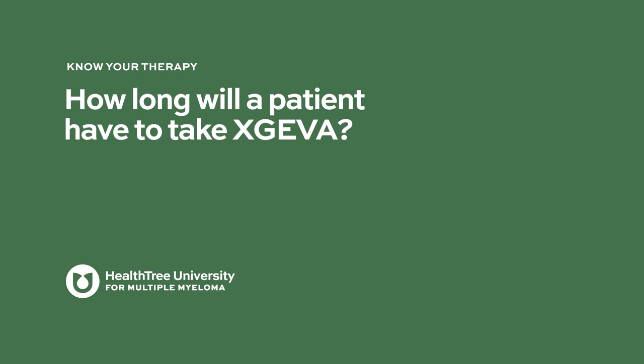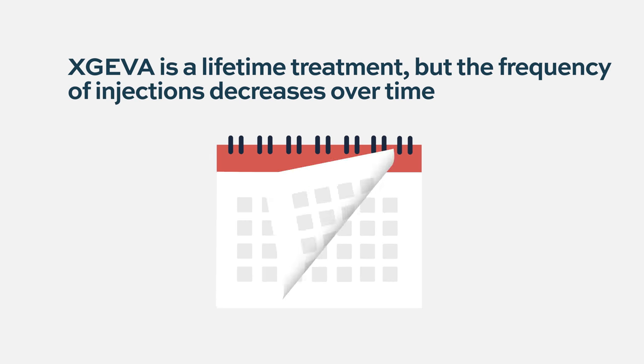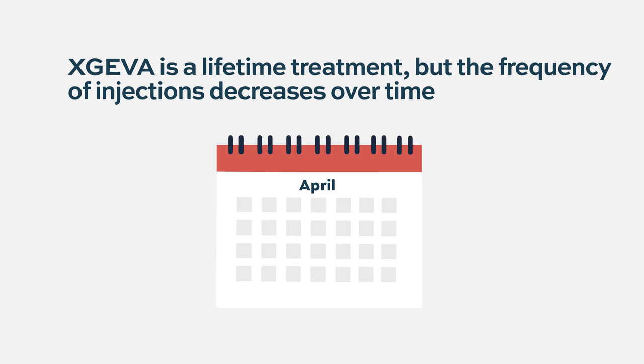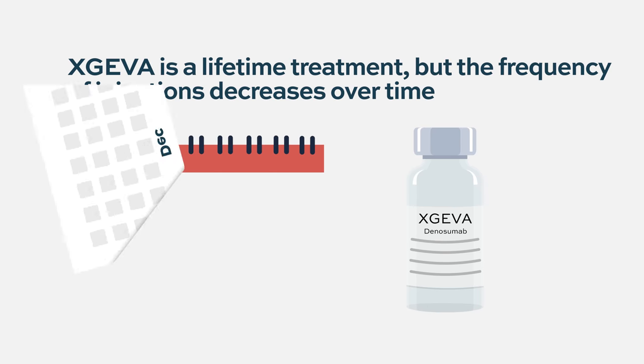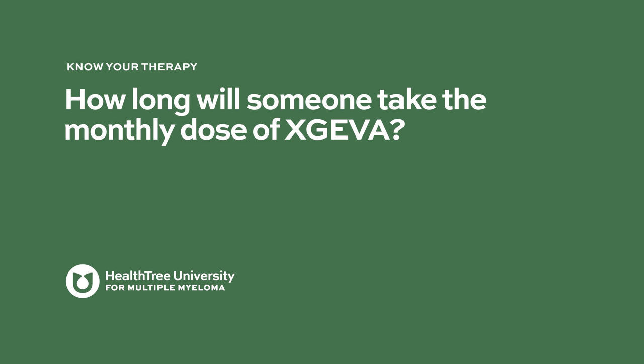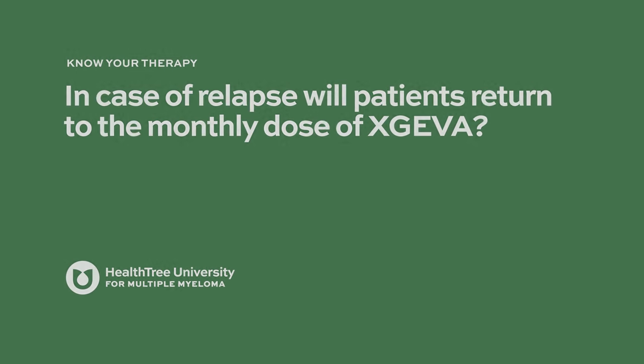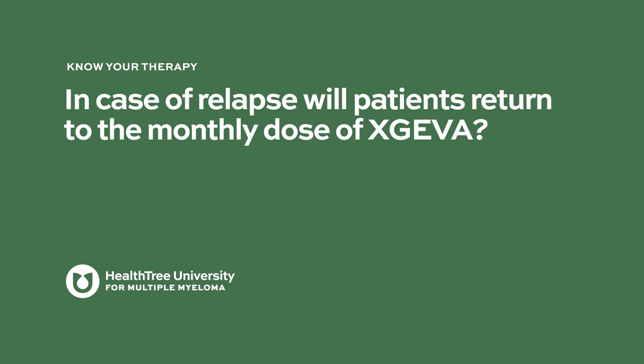How long will a patient have to take Xgeva? Usually you're on it for life because we don't stop it completely — you take at least one injection every six months or once a year to prevent the rapid bone loss that occurs if you come off it. The monthly dose is typically given for about a couple of years. In case of relapse, we usually go back to the monthly dose.